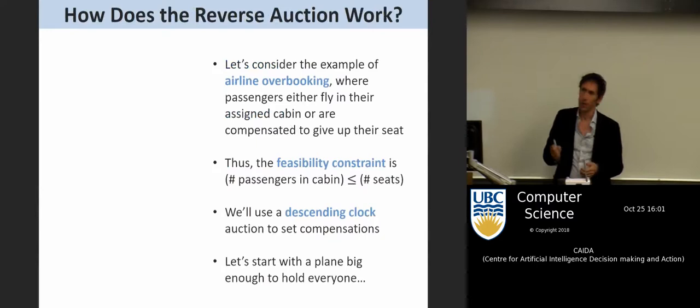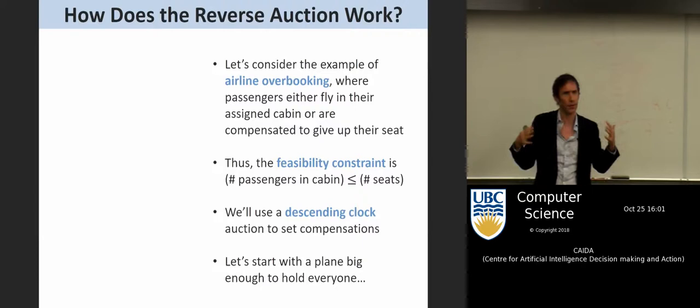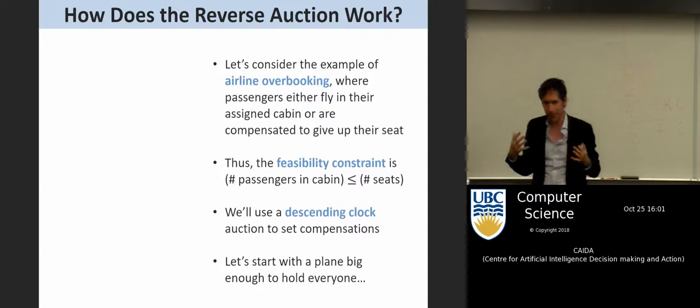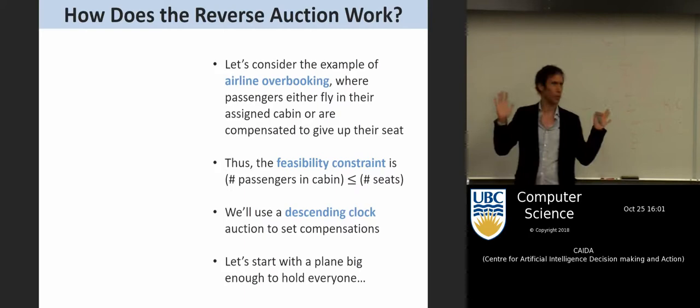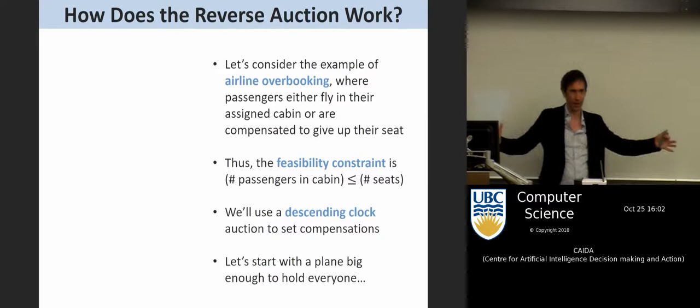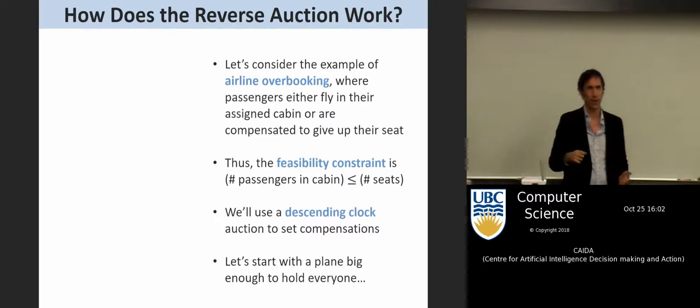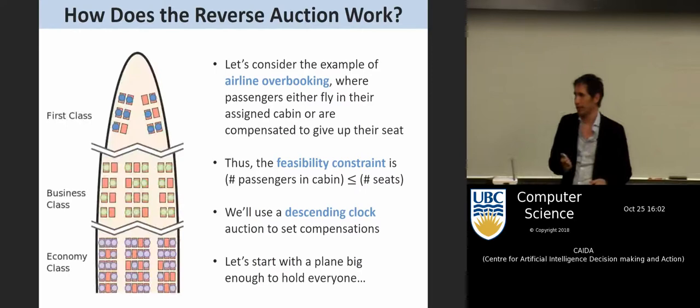Let me show how this reverse auction works through an airline overbooking analogy. Imagine airline overbooking where you're not allowed to be bumped between cabins — you have to fly in your ticketed cabin. The feasibility constraint is the number of people in each cabin must be less than or equal to the number of seats. As long as they have more people than seats, they have to get someone to give up their seat.